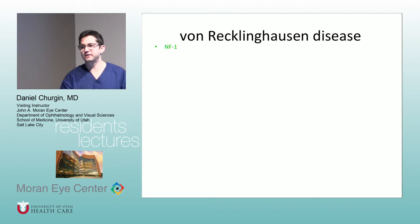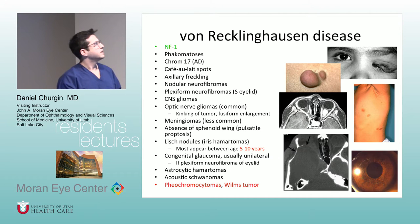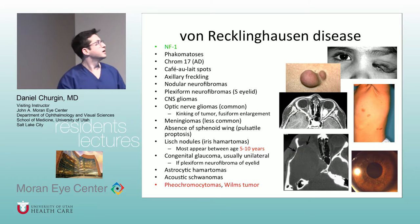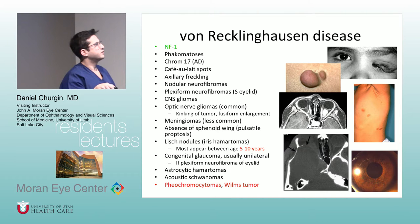Von Recklinghausen disease is the other name for NF1. There are 17 letters in Von Recklinghausen disease, and it's on chromosome 17 — that's usually how people remember it. I don't think it's high yield to memorize all the diagnostic criteria. You should be able to put it together if they give you a patient with some of these features: café-au-lait spots, axillary freckling, nodular neurofibromas, plexiform neurofibroma, an S-shape of the eyelid, CNS gliomas, optic nerve gliomas, fusiform enlargement of the optic nerve sheath. Meningiomas are less common. Absence of the sphenoid wing with pulsatile proptosis is high yield — I've seen that show up.